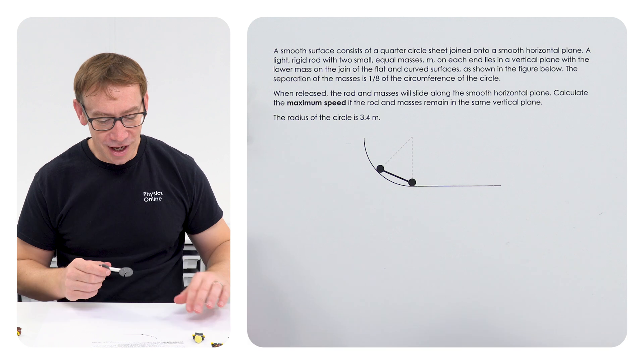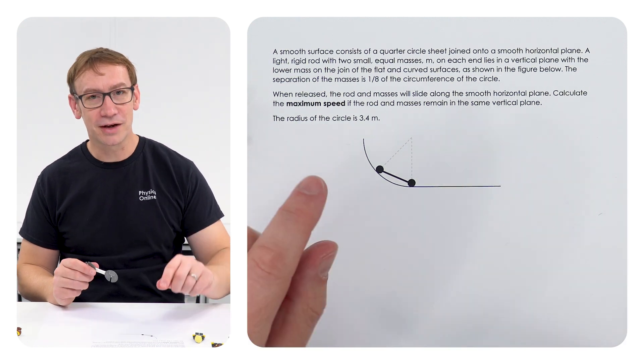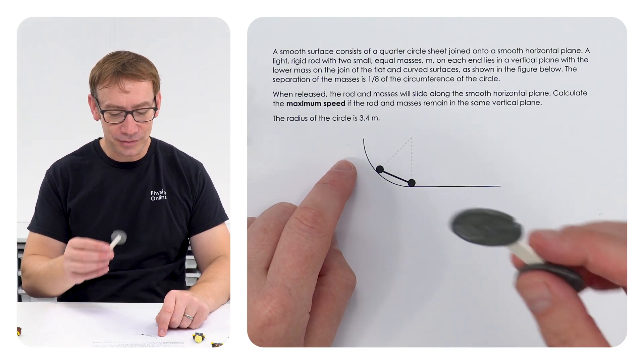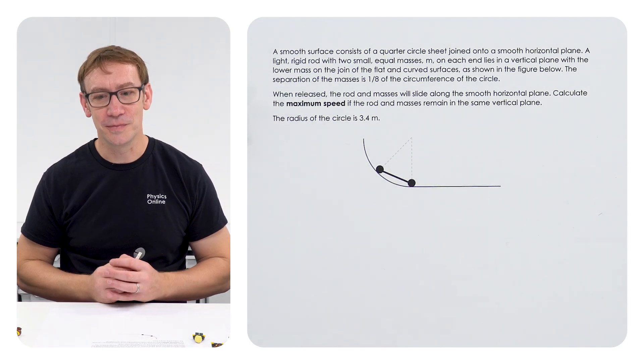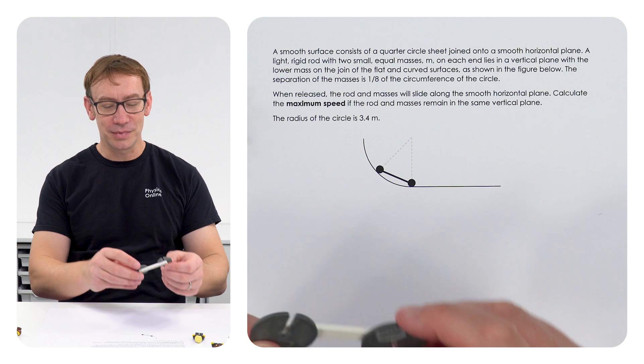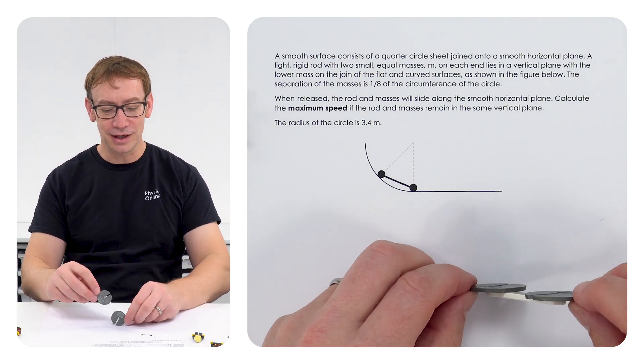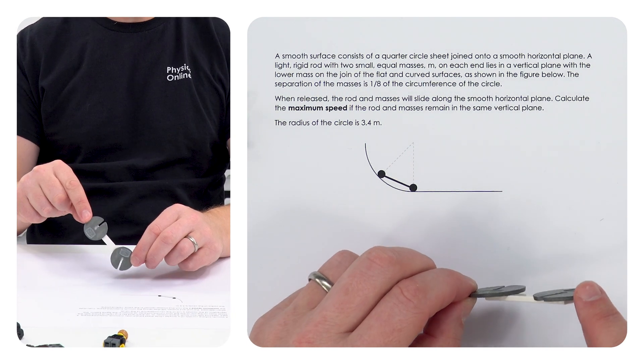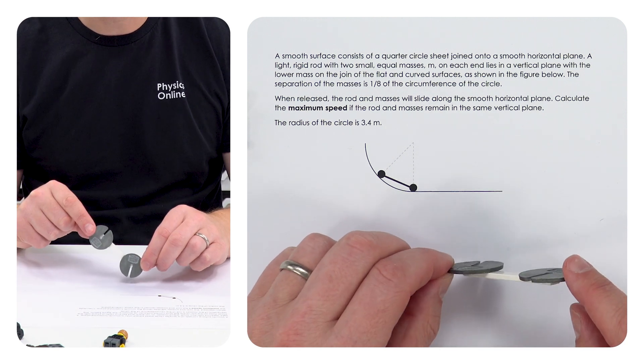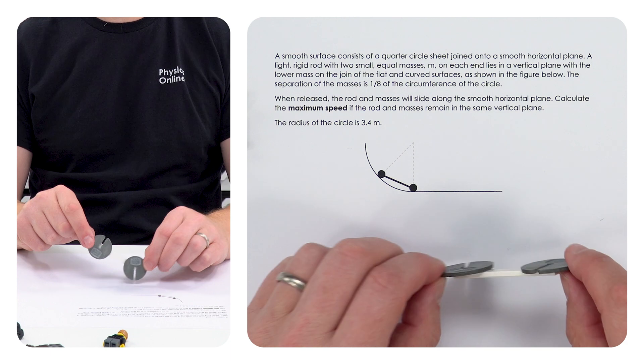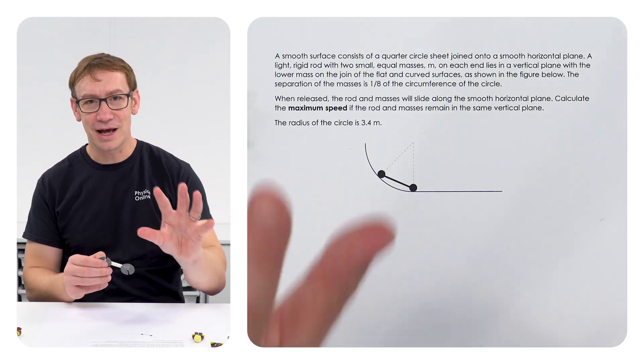This will slide along that part of a circle, and we want to calculate the maximum speed as it falls down. We have something initially quite high. Over time, the high bit is going to drop down and the gravitational potential store of energy is going to be transferred to the kinetic store. So that's the principle.